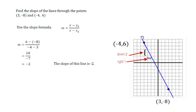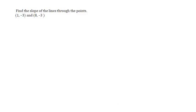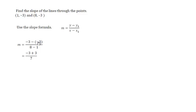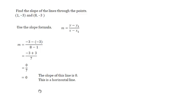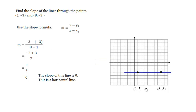If you graph the two points, you will notice the line goes downhill from left to right — it falls 2 and goes to the right 1, giving a slope of negative 2. Find the slope of the line through the points (1, negative 3) and (8, negative 3). Using the slope formula, y₂ minus y₁ is negative 3 minus negative 3, over x₂ minus x₁ which is 8 minus 1, or 7. This gives 0 divided by 7, which is 0. It is okay to divide into 0, but not by 0. The slope of the line is 0 — this is a horizontal line.